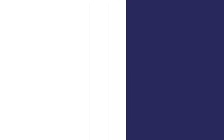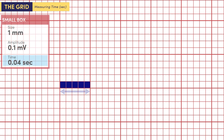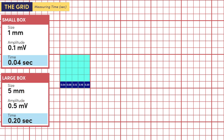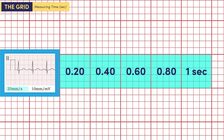Now let's focus on time. When measuring in a horizontal direction, you are measuring time. We know that each small box has a value of 0.04 seconds. So let's count across: 0.04, 0.08, 0.12, 0.16, and 0.20 seconds. Therefore, a large box represents the duration of 0.20 seconds or 200 milliseconds, which also means that five large boxes represents the duration of one second. Notice that this is in alignment with the print speed standard of 25 millimeters per second.